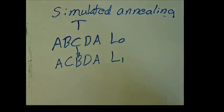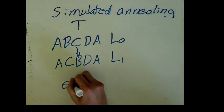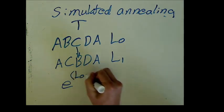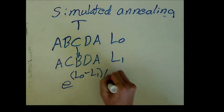If L1 is less than L0, then we will replace our current path with the adjacent path. But if L1 is greater than L0, then we will only replace our current path with a probability of E to the L0 minus L1 divided by T.